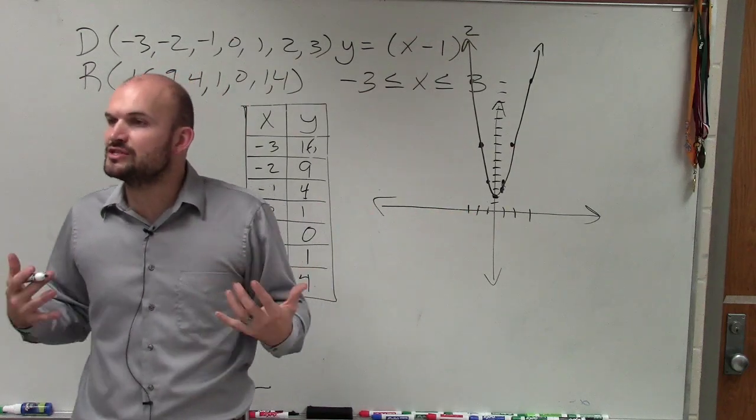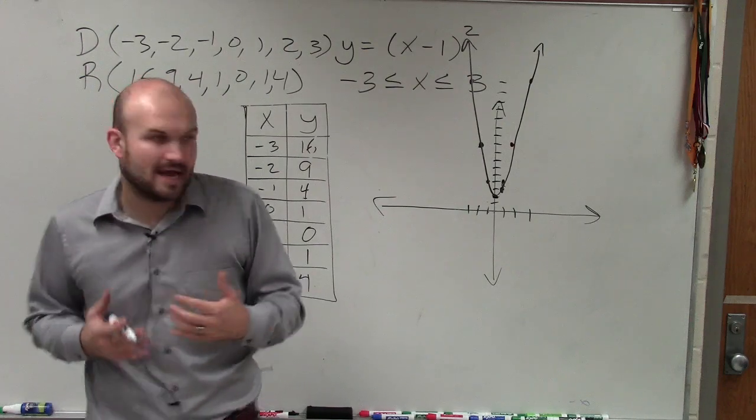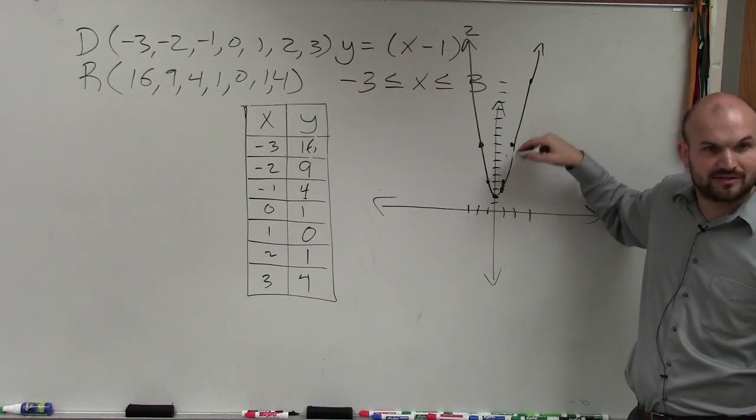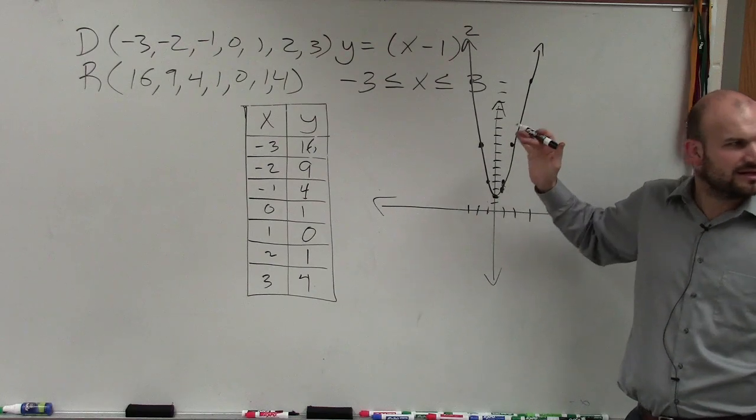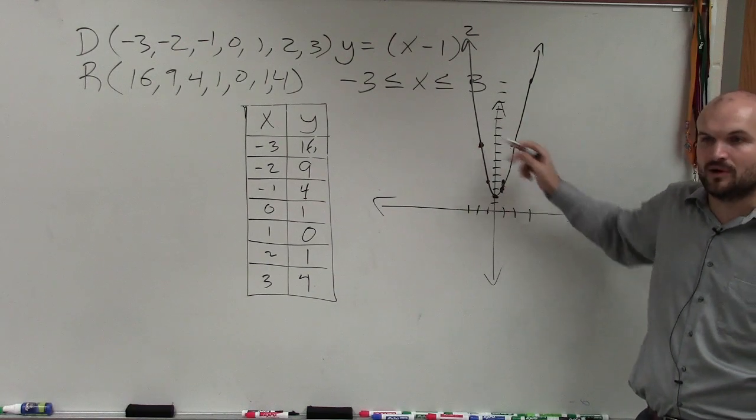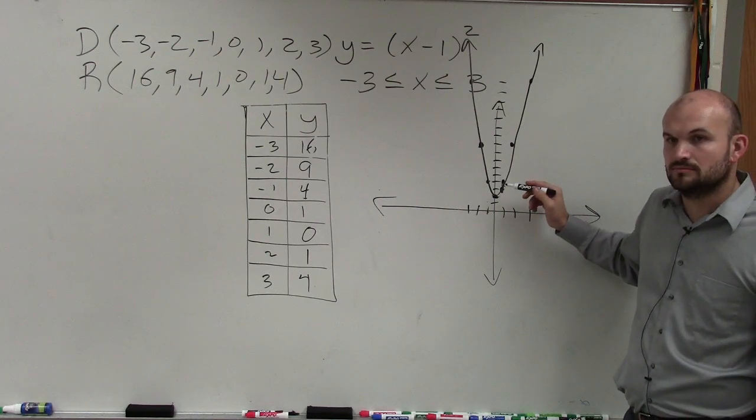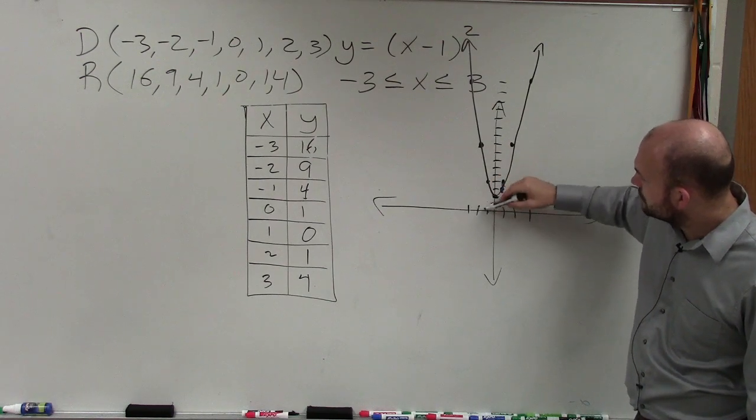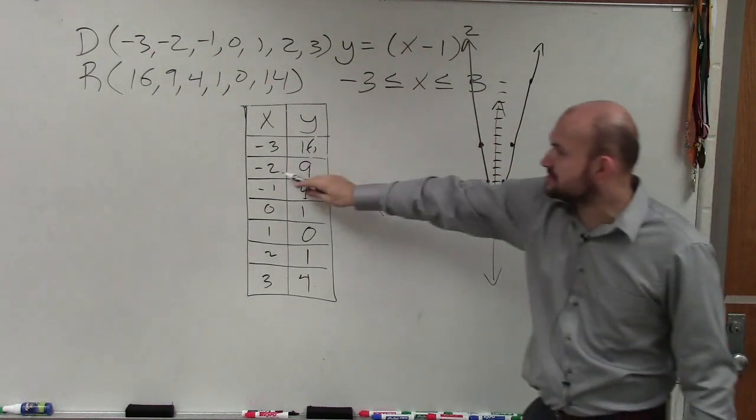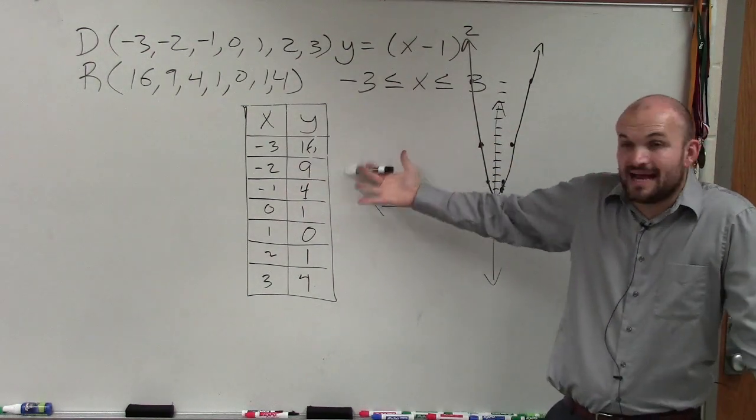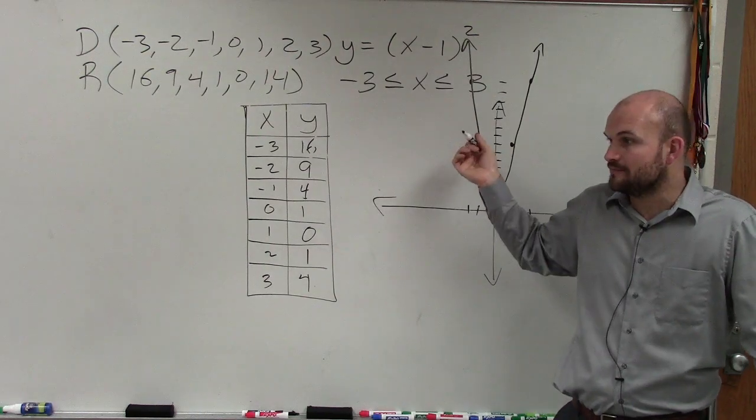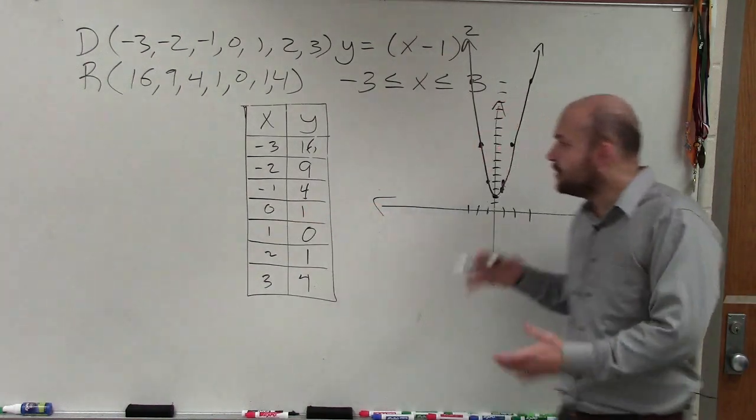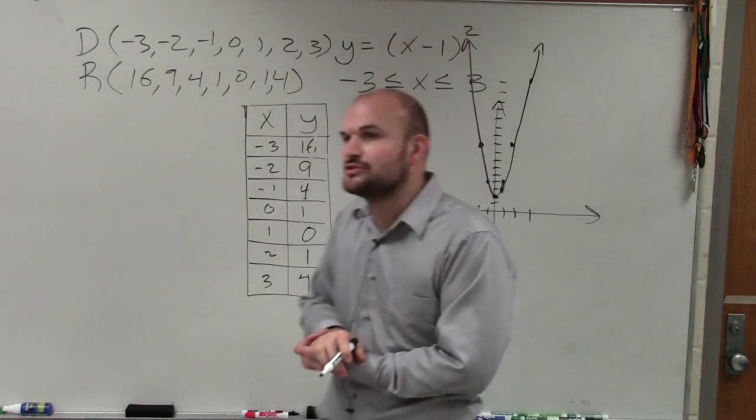Rather than trying to list all of them, let's say is there any restrictions that are not a part of the domain? Is there any value for x that would not have a coordinate point? Is there any point that anybody can think of? Any x value that would not be a part of this graph? x equals negative 2. Is there a value for x equals negative 2? Yeah, it's right there. So is there any value that x cannot be that would not be a part of this? So the point is, ladies and gentlemen, there is no restrictions on the domain.